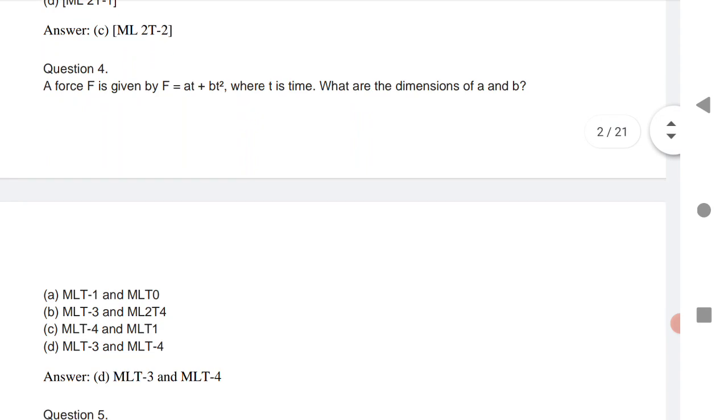Question number 4, very important question. A force is given as F equals to AT plus BT square, where T is time. What are the dimension of AB? The dimensions are ML T power minus 3 and ML T power minus 4.